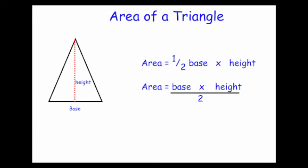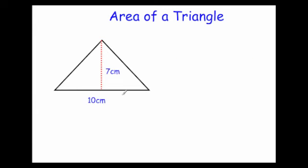Let's have a look at a typical question. Here we've got a triangle where the base is 10 centimeters and the height is 7 centimeters. To work out the area you can either do the base times the height and then half it, or half the base times the height. Writing the formula: area is equal to half the base times the height, so half of 10 is 5.